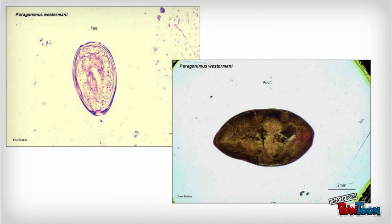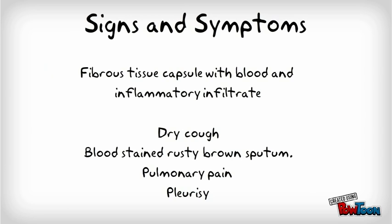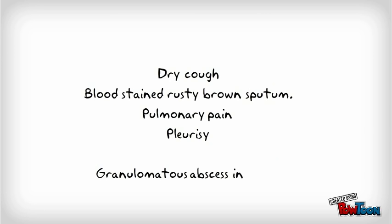Signs and symptoms: the fluke provokes development of a fibrous tissue capsule with bloody, purulent material containing eggs. There is inflammatory infiltrate around the capsule. Symptoms include a dry cough followed by production of blood-stained, rusty-brown sputum, pulmonary pain, and clubbing. Worms may also migrate to the brain, where they lay eggs and cause a granulomatous abscess resulting in symptoms similar to epilepsy.